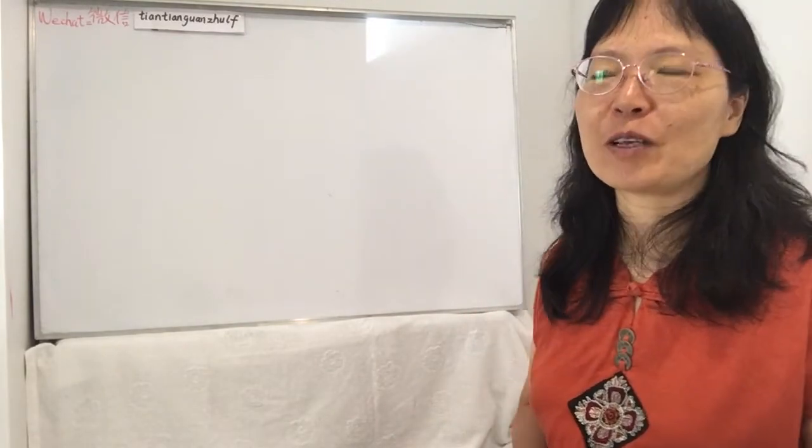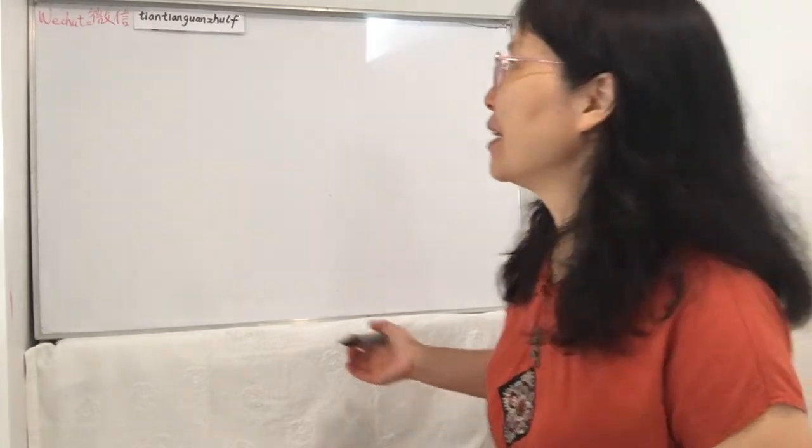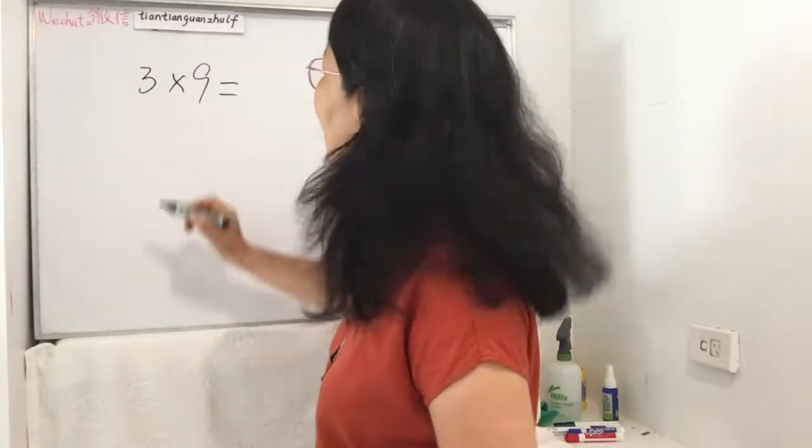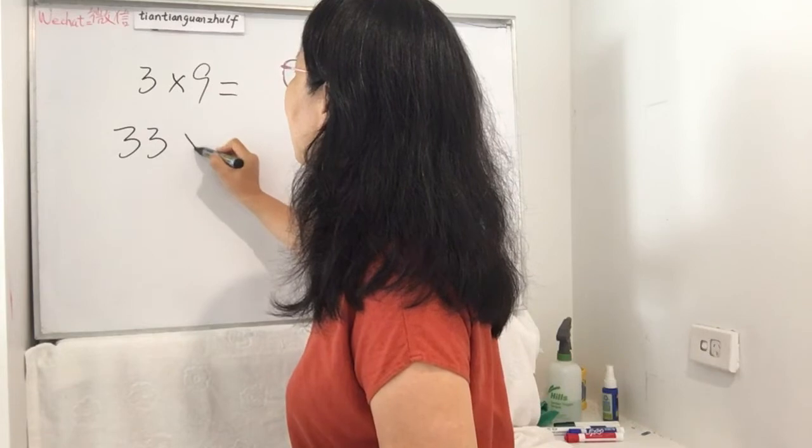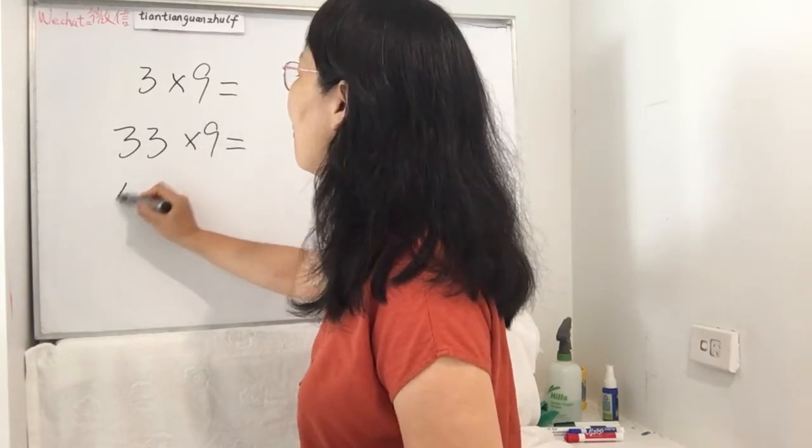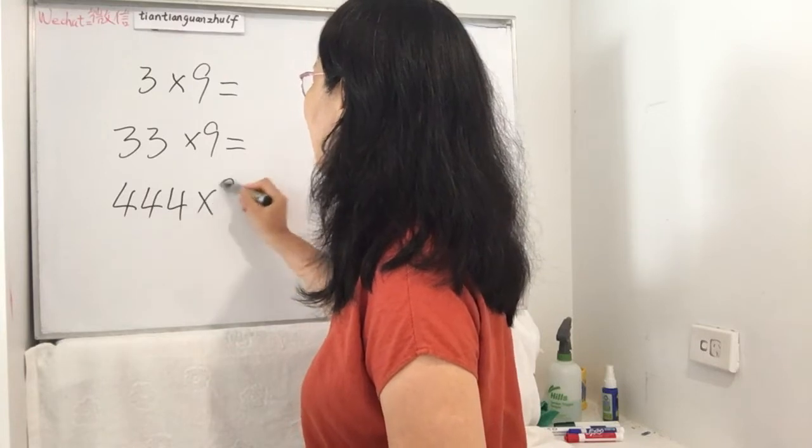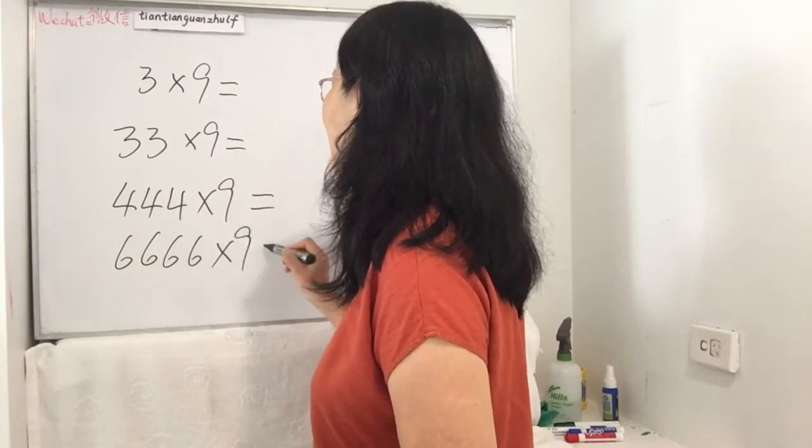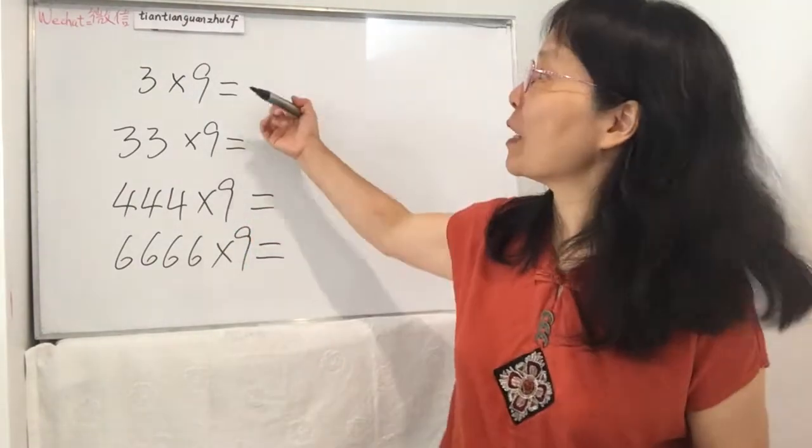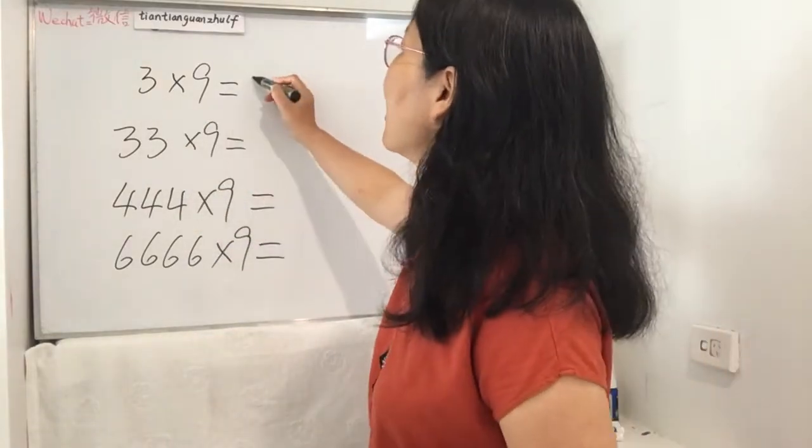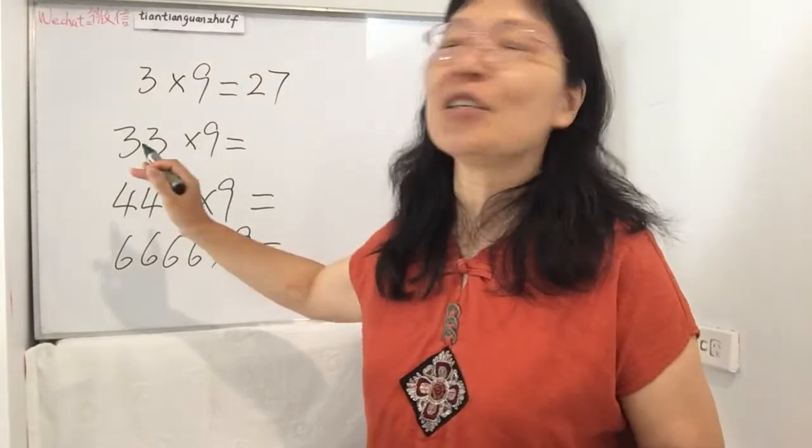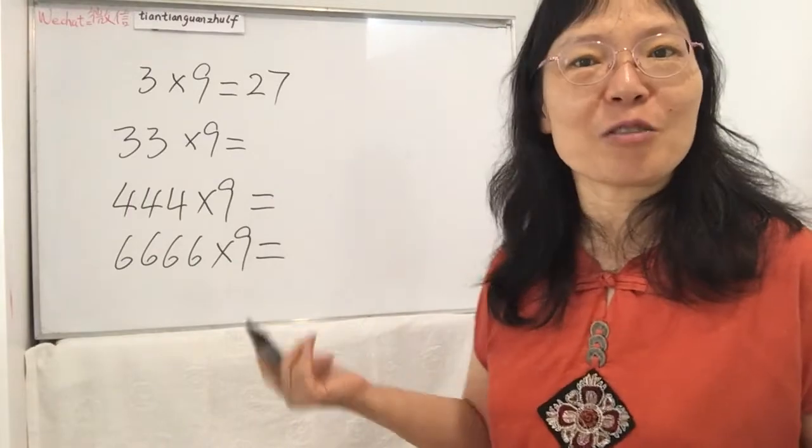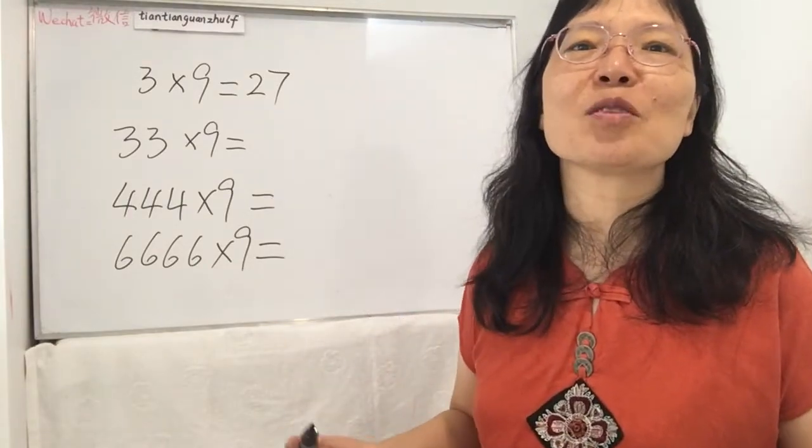Now let's see one more. Today I'm going to show you another thing with nine times nine. If I ask you 3 times 9 you're very fast, but if I ask you 33 times 9, or 444 times 9, or 6666 times 9, how can you work it out fast? The same way, the same trick I'm going to show you.